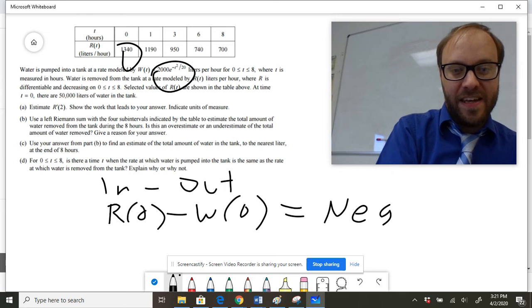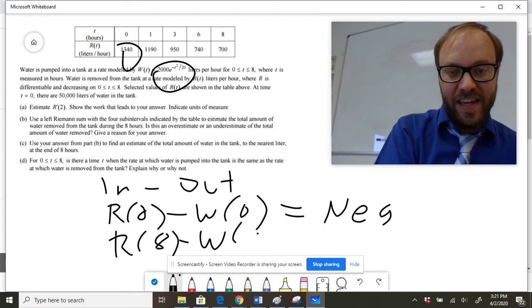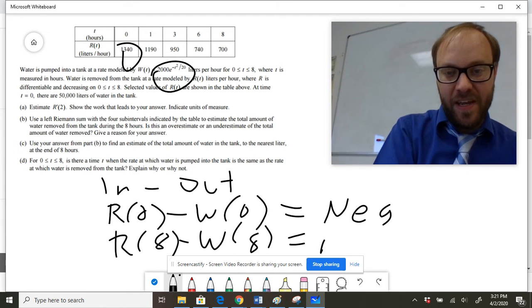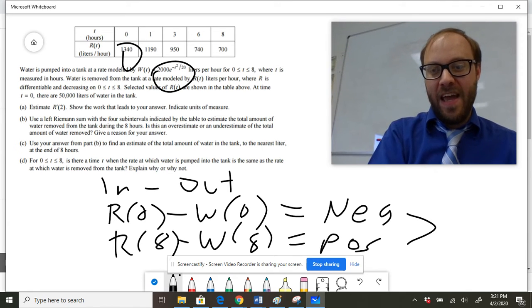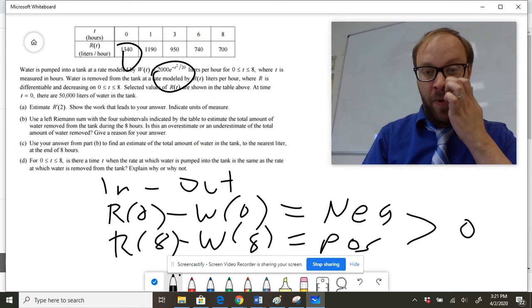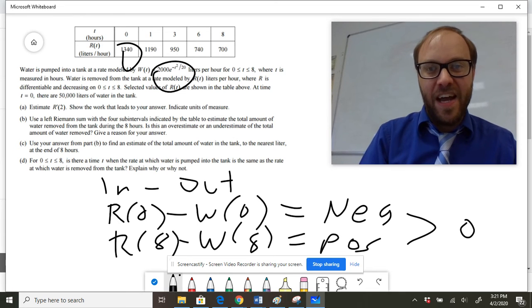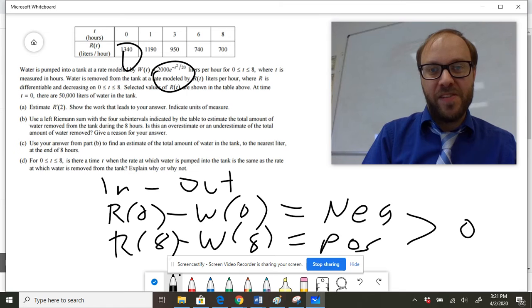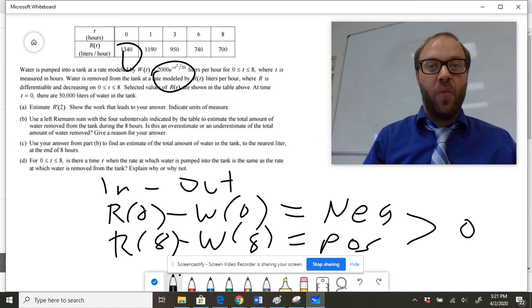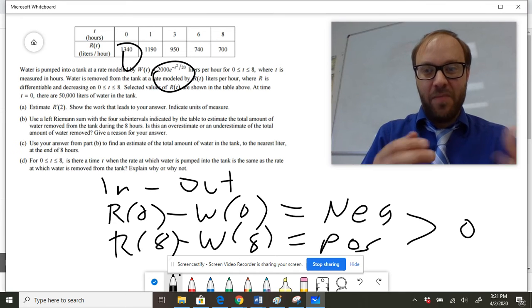If you go in and you find the rate at eight, and you subtract the rate at which the water is leaving at eight, you end up getting a positive value. Zero has to fall somewhere between a negative value and a positive value. By the intermediate value theorem, since that overall rate function will be continuous, that means there had to be some point in time when the rate of change is zero. And that moment in time when the rate of change is zero, water is coming in at the same rate that it's leaving.